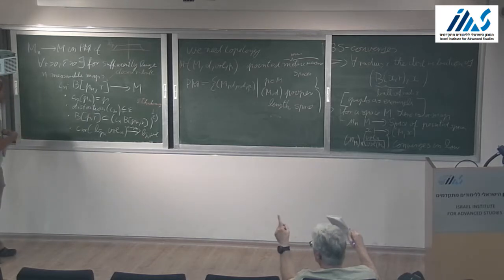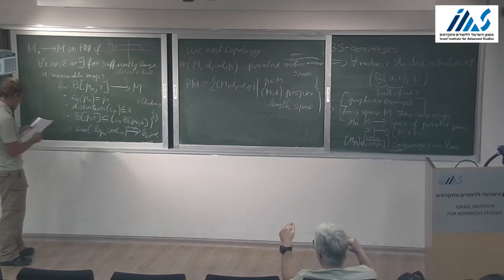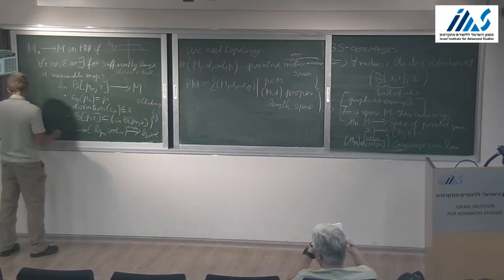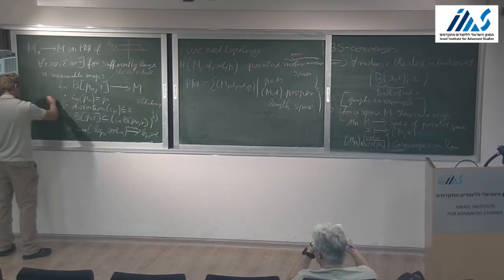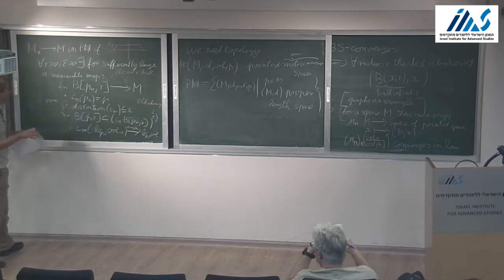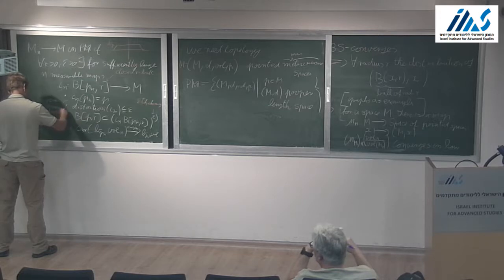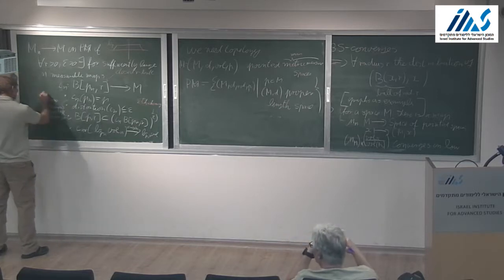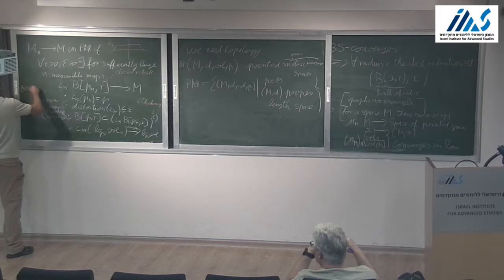If that is satisfied, we have convergence of MM spaces. Some special cases are more studied. For instance, if you plug in R equals infinity — requiring these maps to be defined on the entire space — you would end up with a notion of Gromov-Hausdorff convergence. If you take only the first three assumptions and forget about the measure, you would have pointed Gromov-Hausdorff convergence.